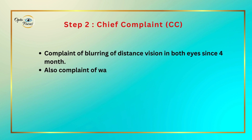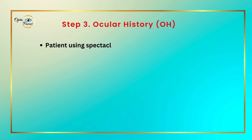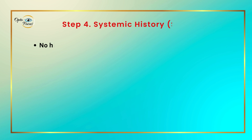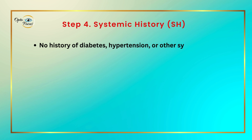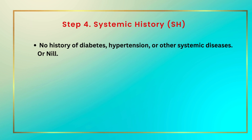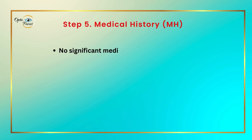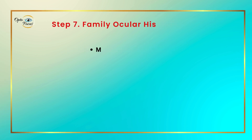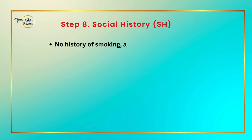Also complaint of watering in both eyes since 1 week. Step 3 — Ocular history: Patient using spectacles since 2 years. No history of ocular surgery, trauma, or other eye conditions. Step 4 — Systemic history: No history of diabetes, hypertension, or other systemic diseases. Step 5 — Medical history: No significant medical history. Step 6 — Allergy history: No allergy to medicines. Step 7 — Family ocular history: Mother had glaucoma. Step 8 — Social history: No history of smoking, alcohol use, or other social habits.